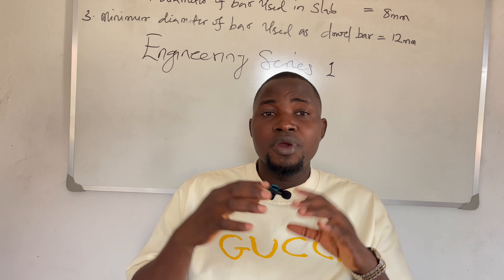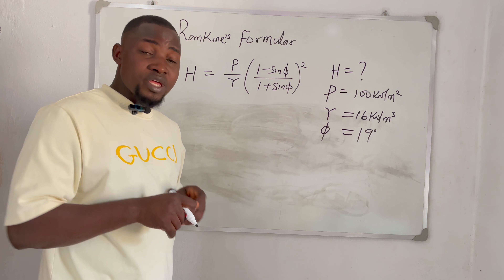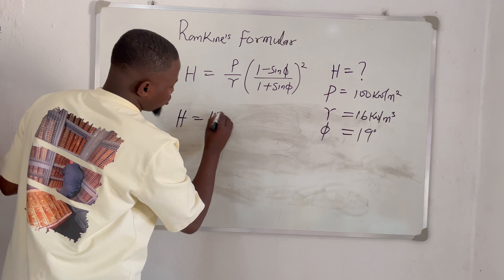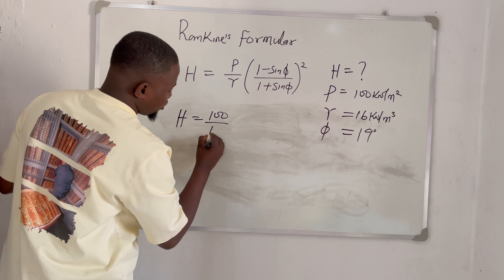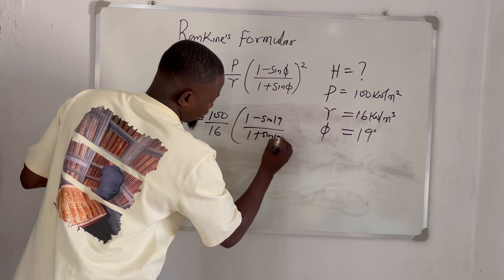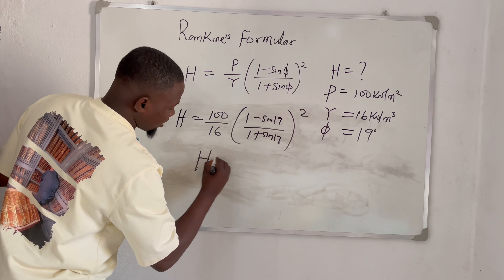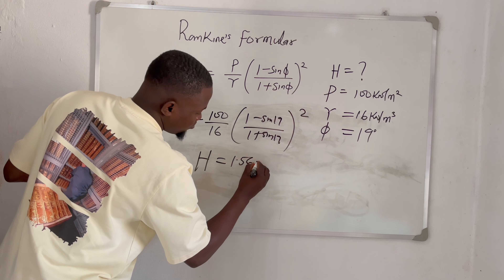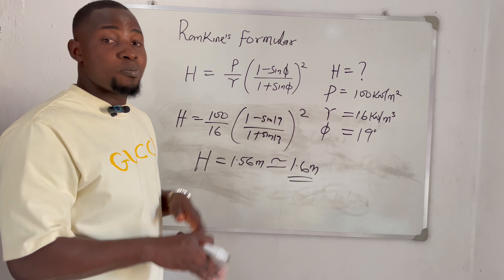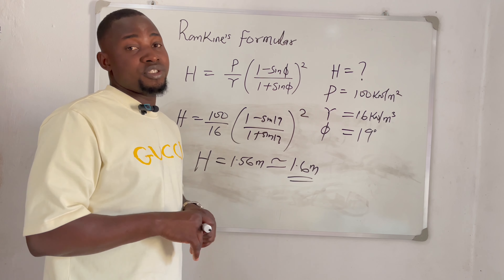So now, if these parameters are given — for example, in my site I have a wet clay soil. I know the bearing capacity of my site. I know the angle of internal friction, which has constant values. I know the density of the soil I'm working with. So if I have all these parameters — the bearing capacity, the density of the soil, and the angle of internal friction — I can quickly substitute to get the result. I'll be solving this example now to determine the minimum depth I am supposed to excavate at my site, using the parameters I obtained from my site. I have a bearing capacity of 100 kN per meter squared, a soil density of 16 kN per meter cubed, and an angle of internal friction (φ) of 19 degrees.